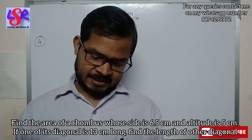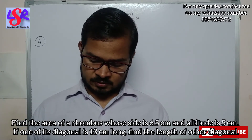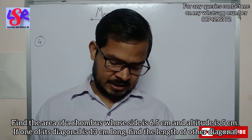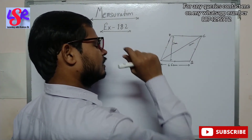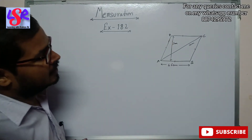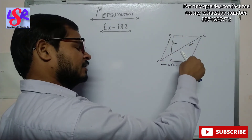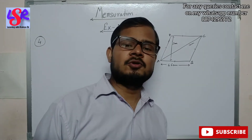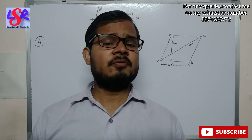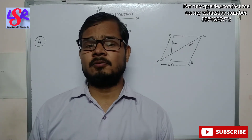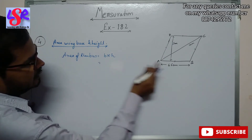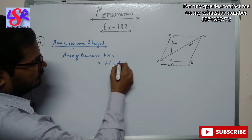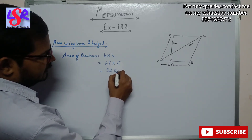Question 4: Find the area of a rhombus whose side is 6.5 cm and altitude is 5 cm. If one diagonal is 13 cm, find the other diagonal. First, we calculate the area using base and height: area = base × height = 6.5 × 5 = 32.5 centimeters squared.